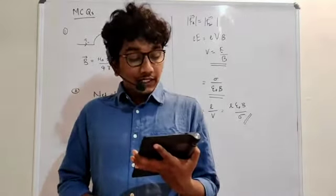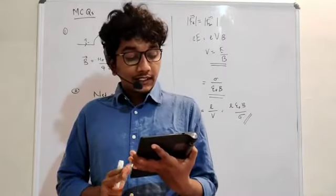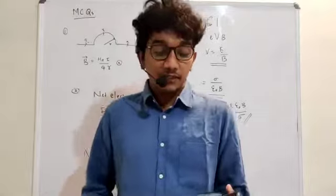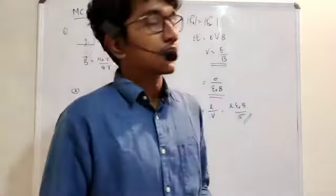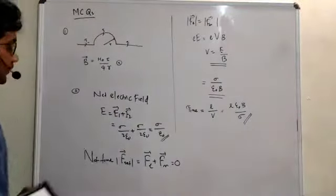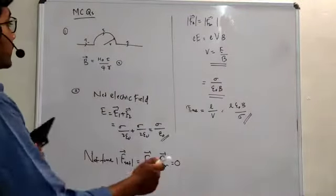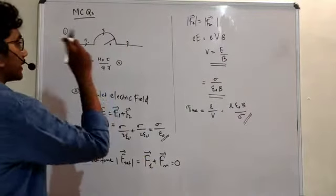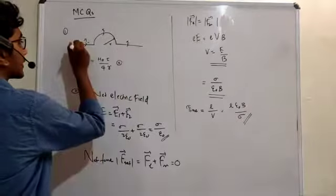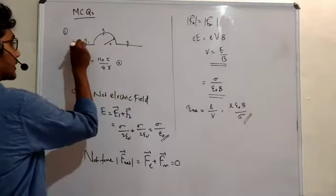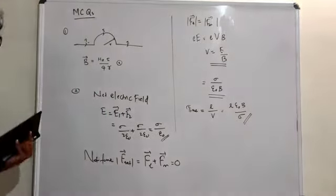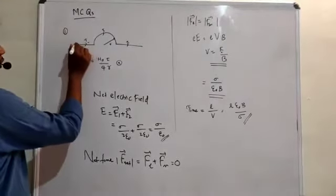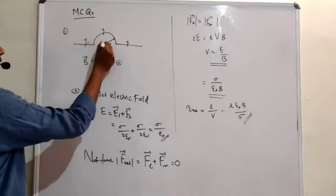Question number one: what will be the magnetic field at the center of the following current loop? Looking at the figure, there is one semicircular loop, and then two straight conductors — one on each side of the semicircle.